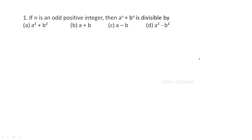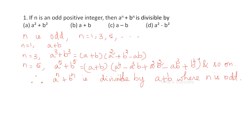This is the first question. If n is an odd positive integer, aⁿ + bⁿ is divisible by what? We have the formula when n is odd — n can take the values 1, 3, 5, etc. We know when n = 1, it is a + b.